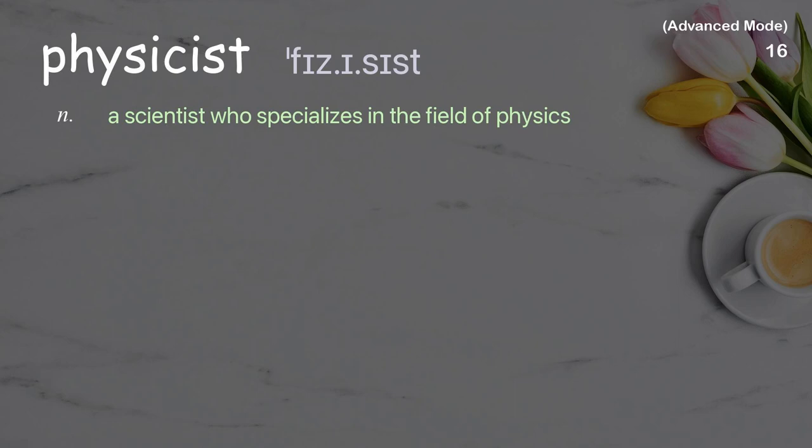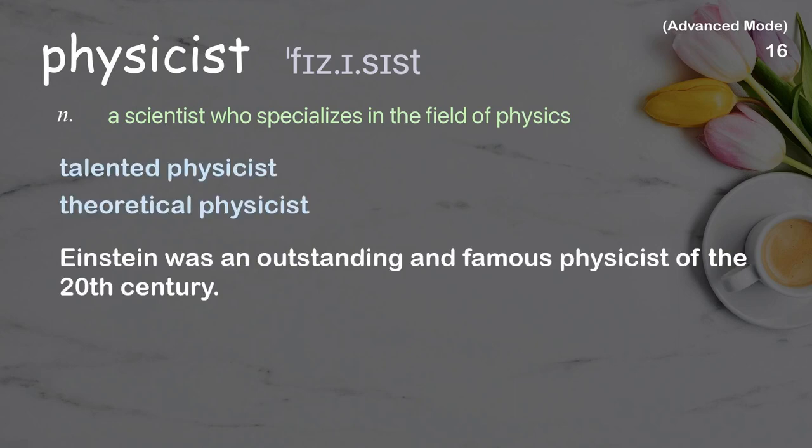Physicist. A scientist who specializes in the field of physics. Examples: Talented physicist. Theoretical physicist. Einstein was an outstanding and famous physicist of the 20th century.